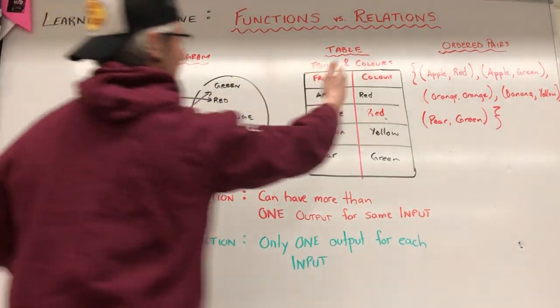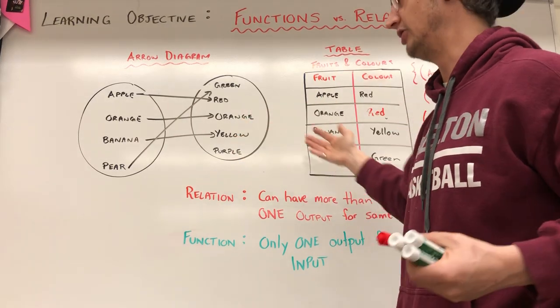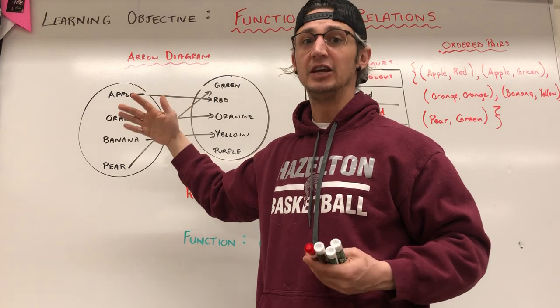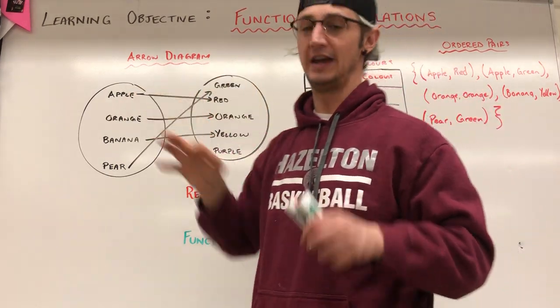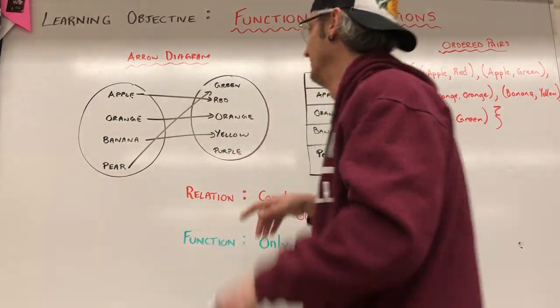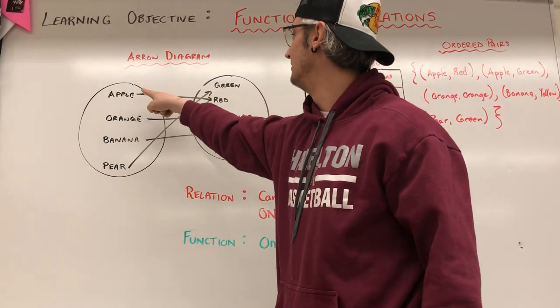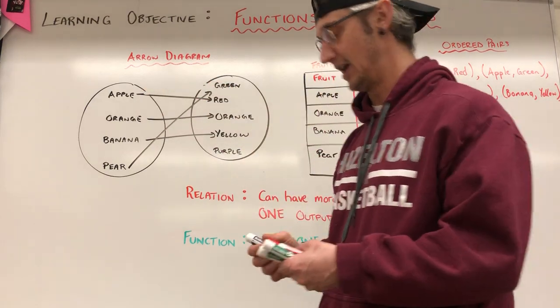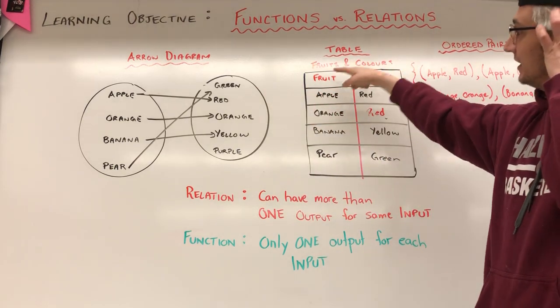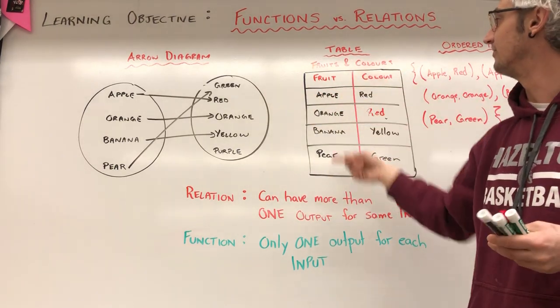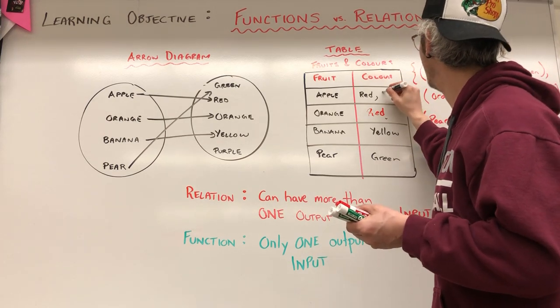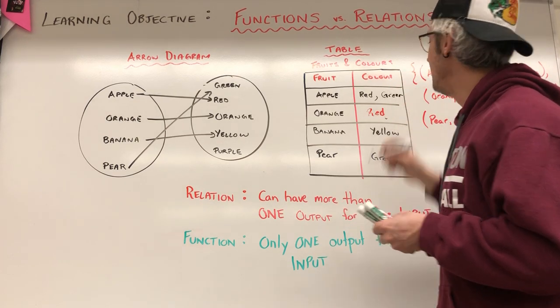We've talked about the three different ways we can represent relationships or relations. A relation is basically, I like to think of it as input and output. So if I input apple, it would output, in this case, apple is red or apple is green. Apple red and then apple green. I can also represent that same relationship with an input output table. The input's fruit, it outputs all the different options. I made changes to this so apple can also be green.